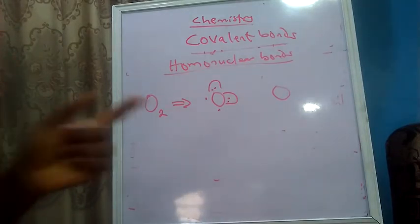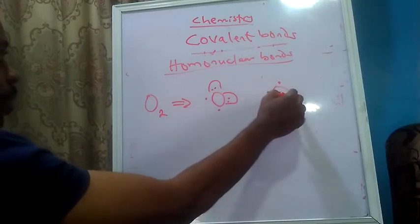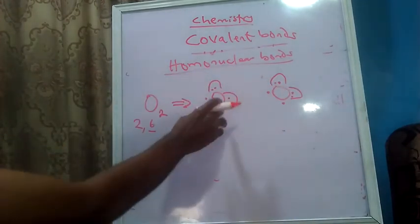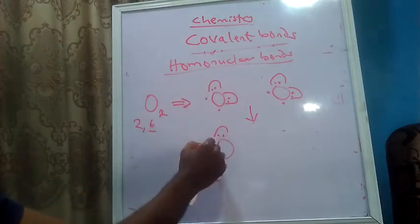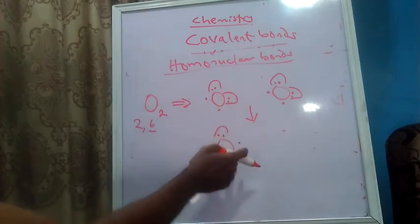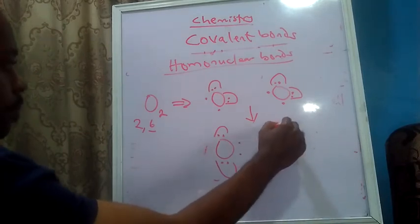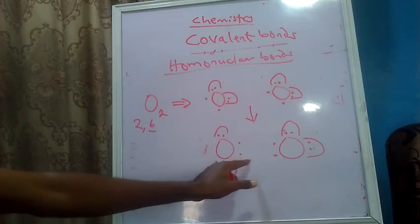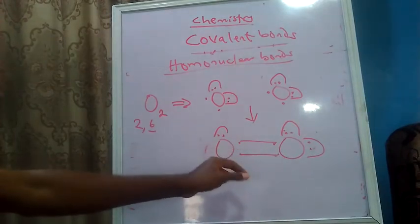These two unpaired electrons for both oxygens will form two bonds — a double bond. After rearrangement, we place the paired electrons aside and bring the unpaired electrons side by side to establish the bond. The first unpaired of the first oxygen and the second unpaired of the second oxygen form bonds — this for this and this for this. We have four electrons forming the double bond for oxygen, so the oxygen molecule is formed by a double bond.